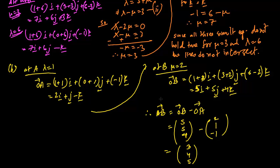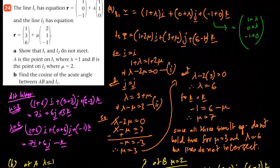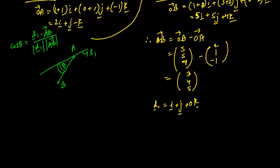To find the angle between L1 and AB: cos θ = (direction vector of L1 · direction vector of AB) / (|d1| × |AB|). The direction vector of L1 is i + j + 0k, i.e., (1, 1, 0).